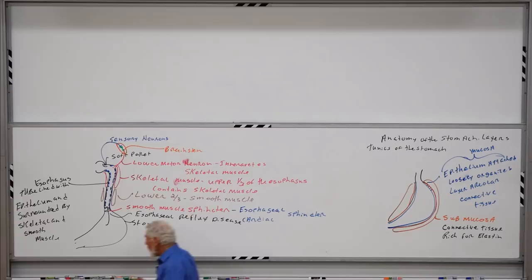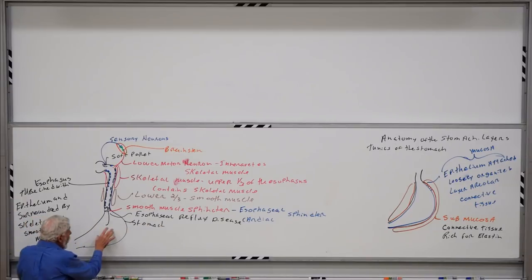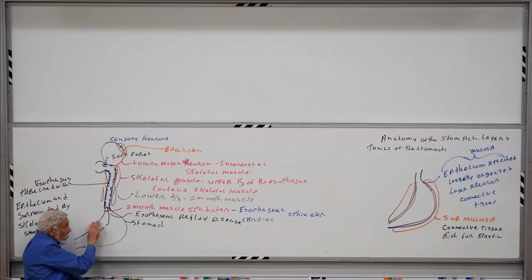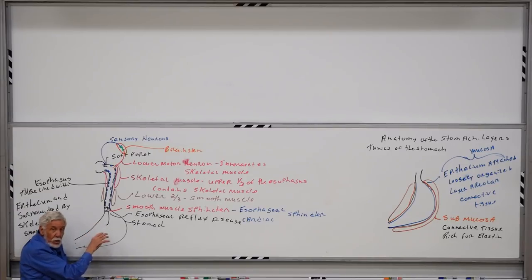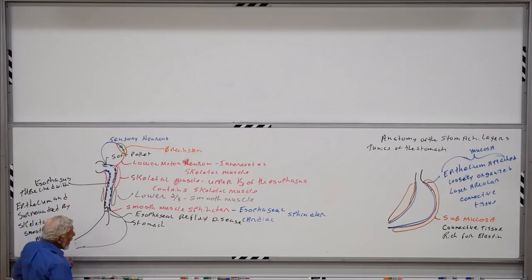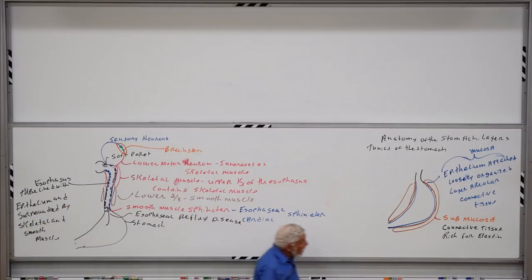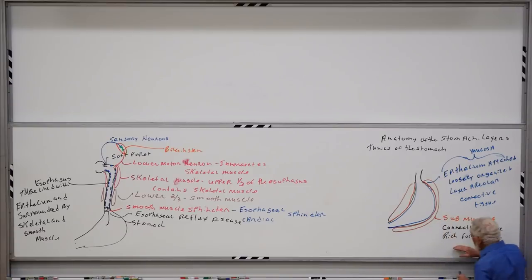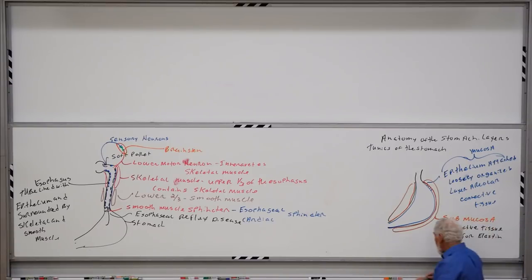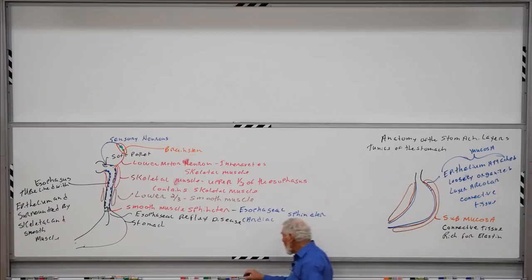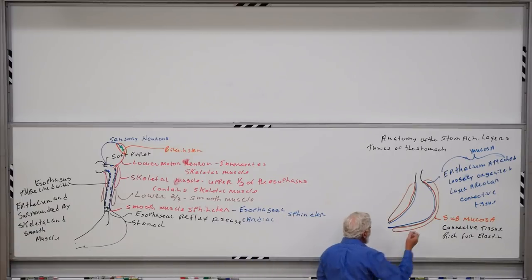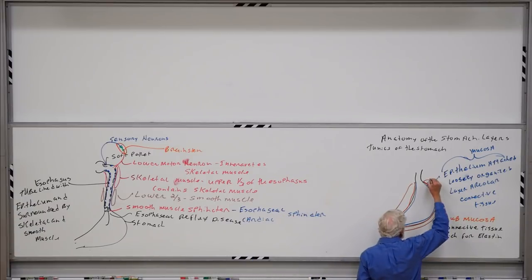The submucosa is fundamentally connective tissue, really analogous to the dermis in skin. Particularly in the stomach, the submucosa is rich in elastin — no surprise, since if we eat a big meal the stomach distends, and that capacity to expand is accommodated by the elastin. On the outside of that are going to be three layers of smooth muscle attached to the submucosa.